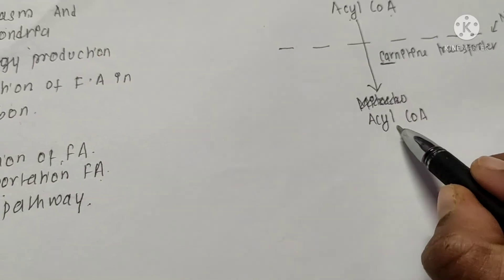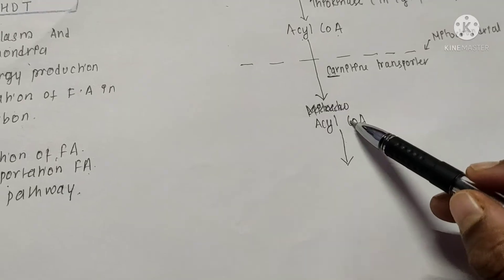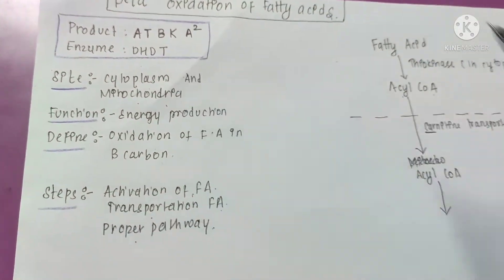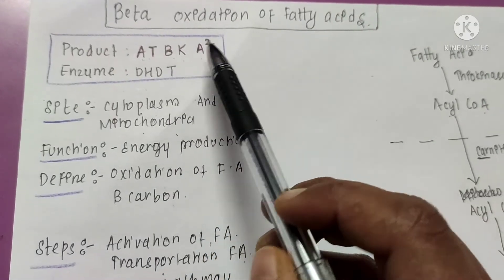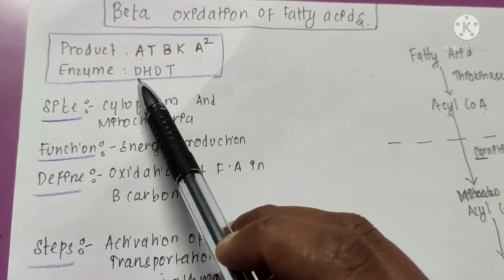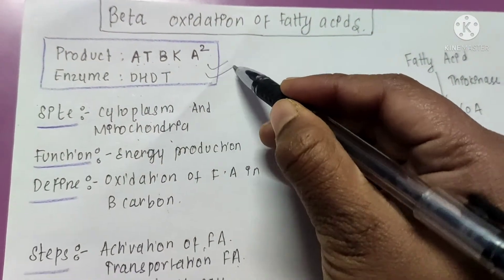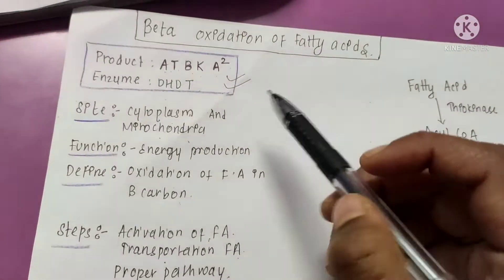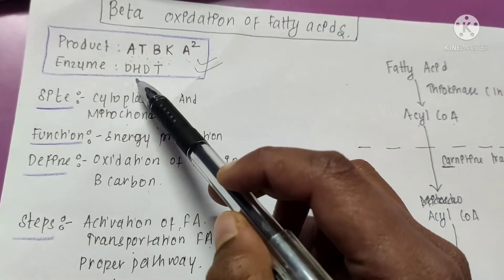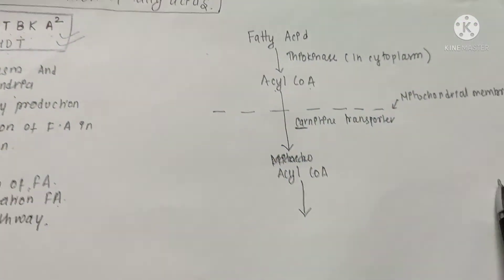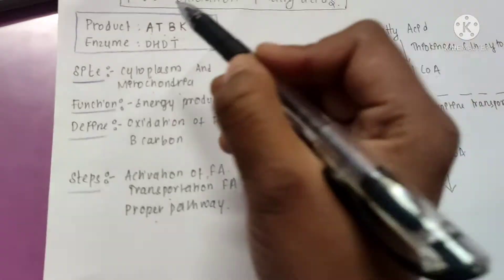Now for the proper pathway, we will use a mnemonic. The products formed are remembered as A, T, B, K, A² and the enzymes as D, H, D, T. We already have product A, which is acyl CoA.